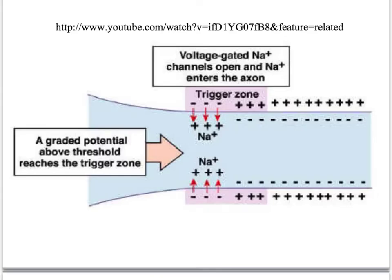Let's just have a close up look at the axon here. What normally happens is we have an ion pump which is continually pumping sodium ions to one side. And what that does is it creates a difference between the outside and the inside of the cell — a potential difference, a difference in charge.